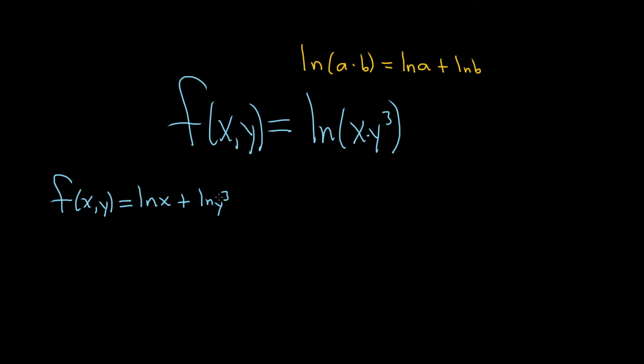One more rule we can use is the power rule. It basically says whenever you have an exponent like this, you can just bring it down and put it in the front. So we have f of xy and that's equal to the natural log of x plus, and now I'll bring down that 3, so 3 ln y.